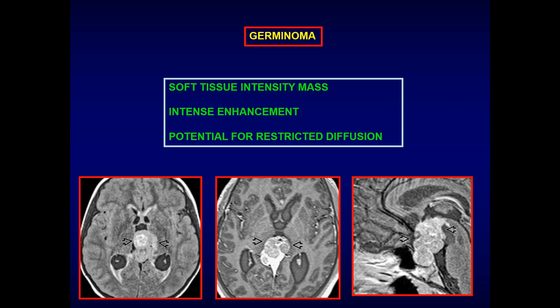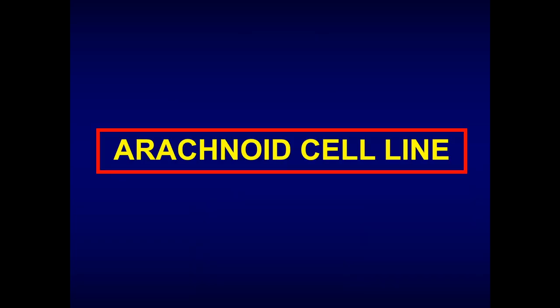Germinoma causes drop metastasis and hydrocephalus — both from cellular debris and direct obstruction. A tumor in the pineal gland region directly pushes on the quadrigeminal plate, causing obstructive hydrocephalus due to compression of the aqueduct of Sylvius. An intensely enhancing lesion with restricted diffusion in these classic locations is — unless proven otherwise — a germinoma. We must check for restricted diffusion and image the entire neural axis for potential drop metastasis.